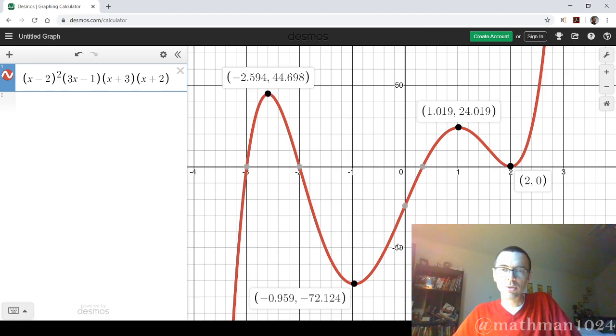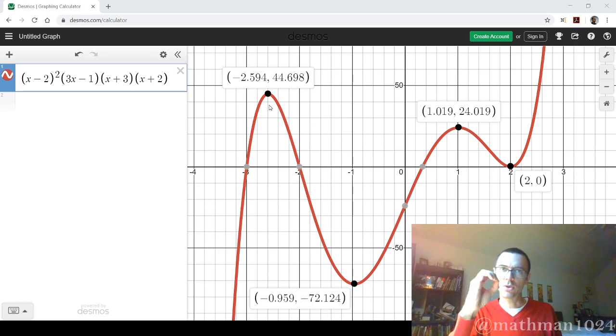1, 2, 3, 4 turning points. So we could have had 4. It's also possible that this could have been, since it was degree 5, we could have just had 2 turning points, or even we could have had 0 turning points.